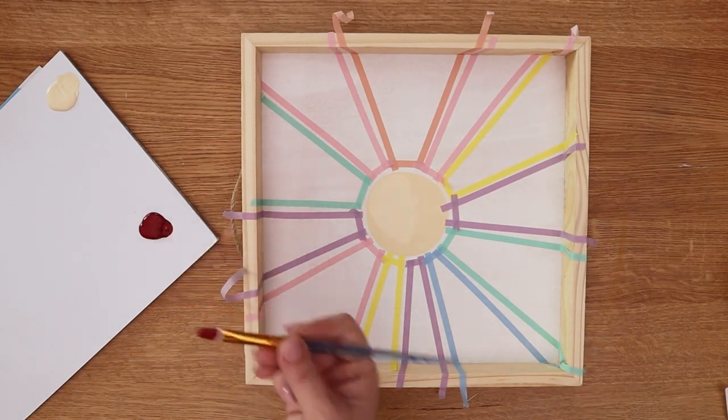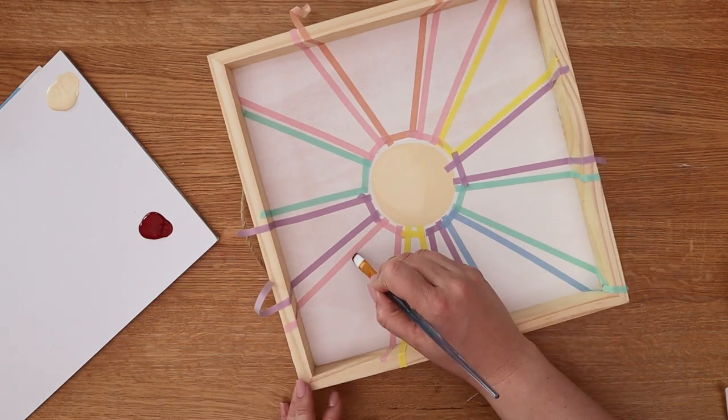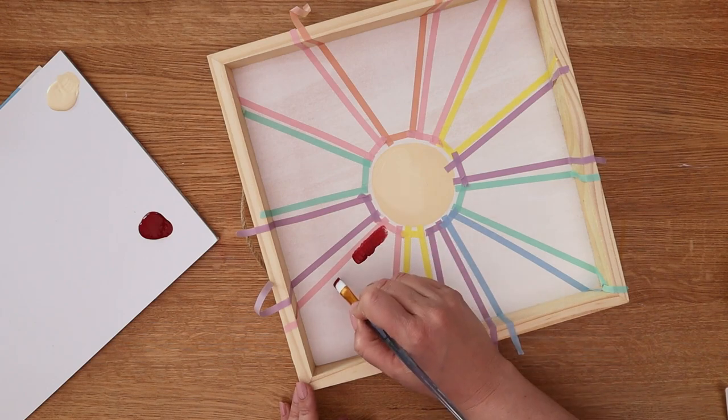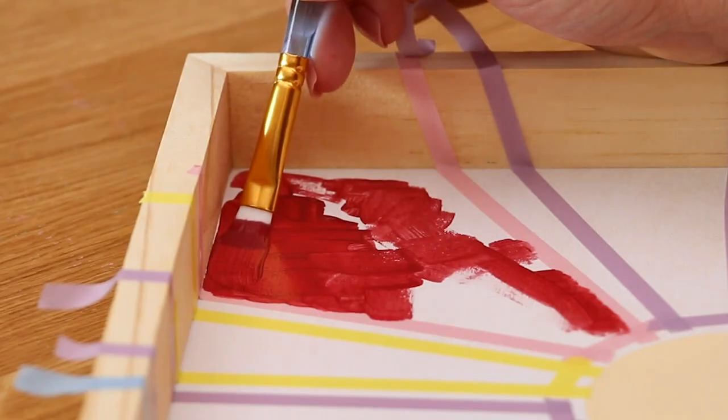I recommend using a flat brush for this and as you paint over the tape be sure that you're pulling your brush away from the tape edge and not pushing the paint towards it.